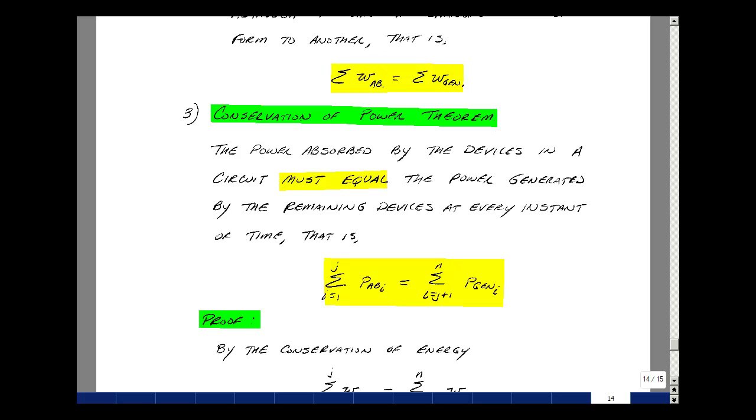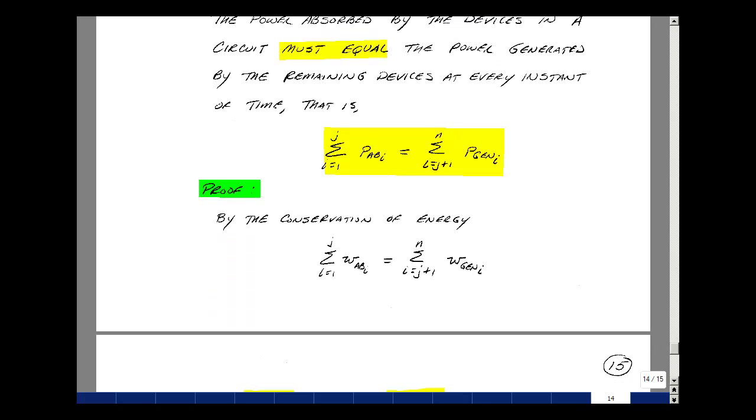Now why would that be true? Well by the conservation of energy postulate, the sum of the absorbed energy equals the sum of the generated energy, from i equals to j, and then from j plus one to n.